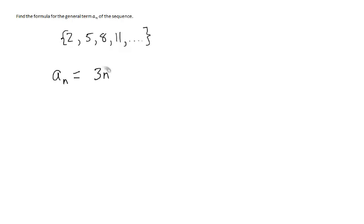So we have 3 times n. Now if we were to plug 1 in, we would have 3, and we need 2. So 3n minus 1 gives us 2. If we plug 2 in for n, 3 times 2 is 6, minus 1 is 5. We can continue to check and find that a sub n is equal to 3n minus 1. That is the formula for the general term a sub n of this sequence.